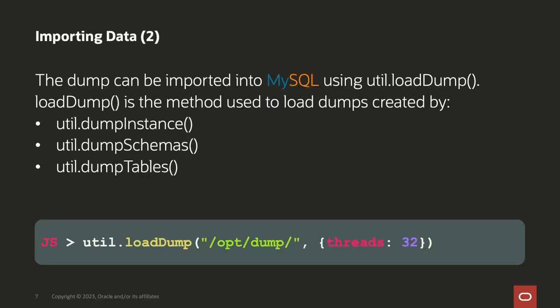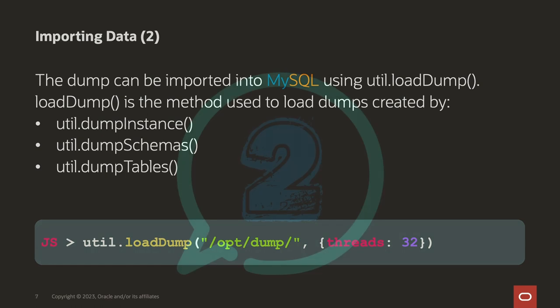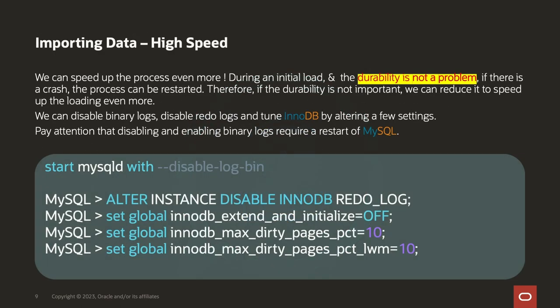When I import the data, I can also determine how many threads I'm going to use to import it — so bring it in faster with more threads. If I'm setting up a new database and importing a bunch of data where I don't care about crash recovery, I can go in and disable the redo log and turn off the bin log. Now I'm not going to do all that IO for that, so when I do my import, it's going to go in a lot faster.